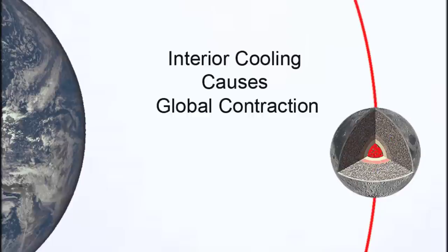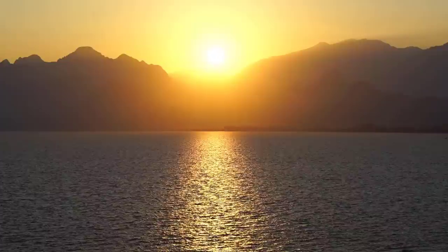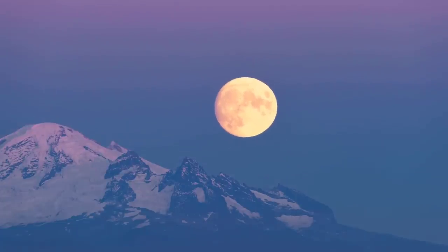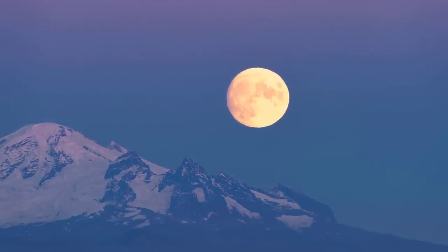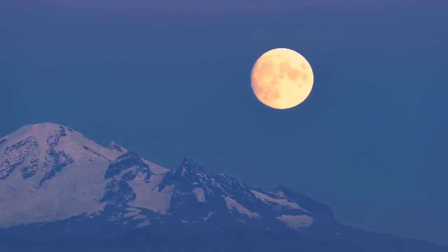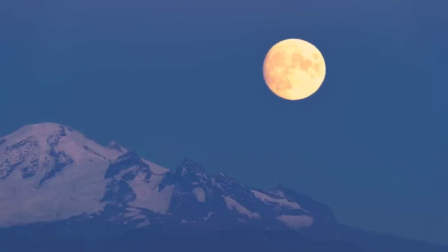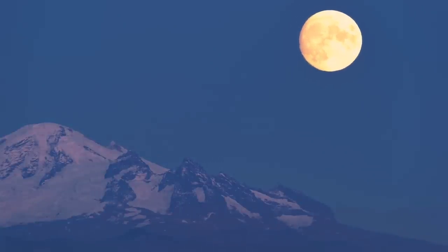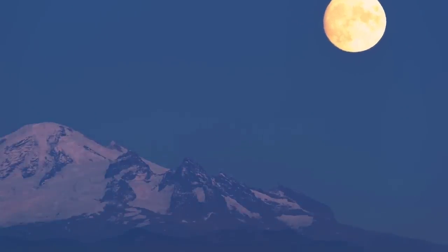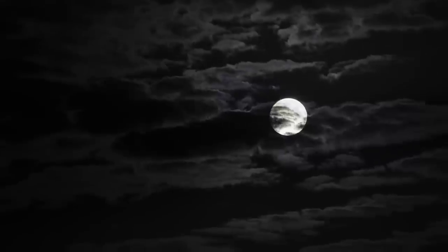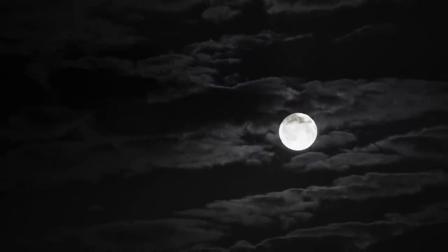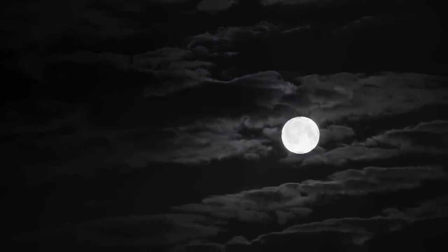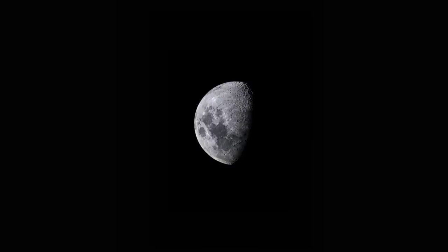While Earth experiences the ebb and flow of day and night, the Moon dances to its own tune. During the two-week-long lunar day, the surface undergoes rapid heating, followed by an equally rapid cooling during the lunar night. These temperature fluctuations give rise to thermal moonquakes. As the lunar surface expands and contracts, seismic activity occurs, revealing the dynamic nature of the Moon's environment.